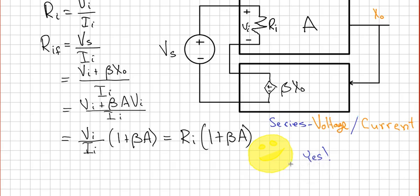Because for a voltage input amplifier such as we have here, ideally the input resistance would be infinity. So as you see here, the input resistance was improved by a factor of 1 plus beta A. Notice that this works for any series input, any voltage input amplifier. It doesn't matter whether the output was voltage or current.